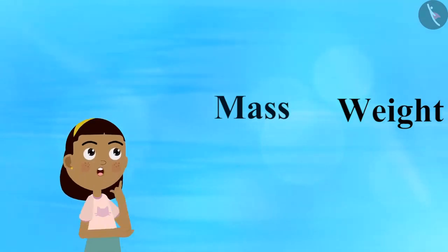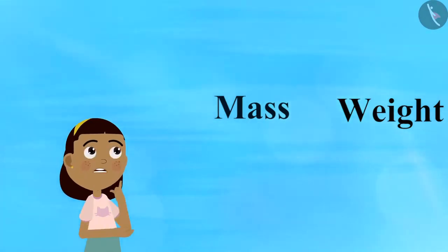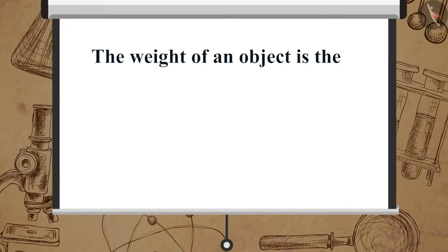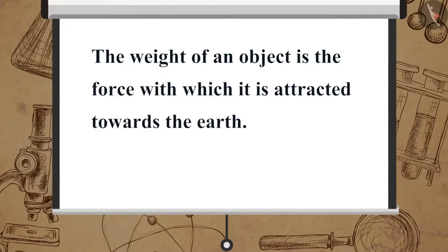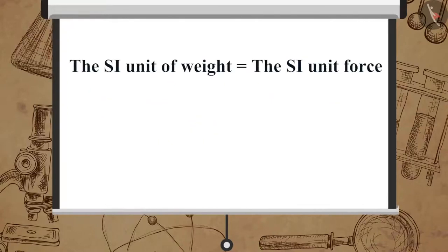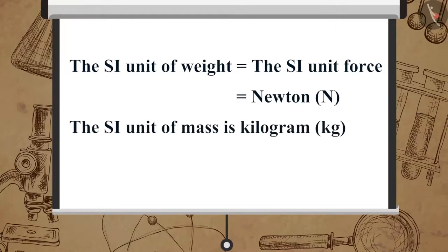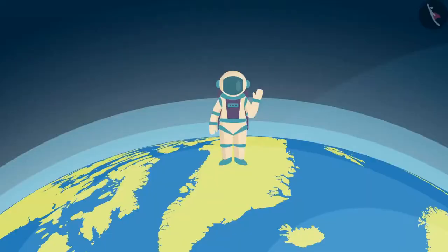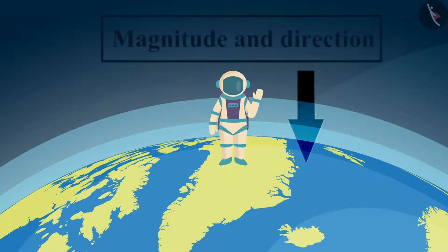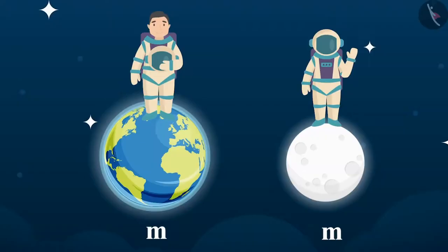Because mass and weight are two different properties, they have different units of measurement. The weight of an object is the force with which it is attracted towards the Earth, so its SI unit is the same as that of force, which is Newton. The SI unit of mass is kilogram. Weight is a force which acts vertically downwards, so it has both magnitude and direction.